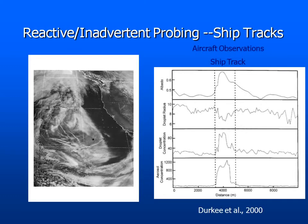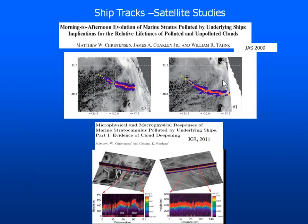Since then there have been different studies done to look more carefully at ship tracks. I call these reactive inadvertent probing because it's hard when you're out there — you get your airplane ready and fly out and you have to find a ship track, which may or may not be there. In the MASF — the Monterey Area Ship Track experiment, around 1994 — they were able to make several aircraft penetrations and characterize the aerosols. We can see the cloud droplet concentration goes dramatically higher in the ship track, along with the aerosol concentration, while droplet radius goes down and albedo goes up, consistent with the Twomey-type approach.